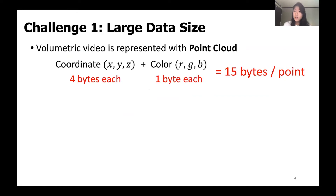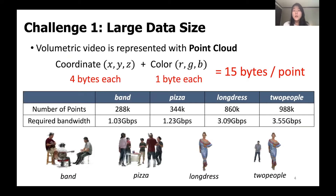The first challenge is the large data size. One of the most popular representations of volumetric video is point clouds, which is simply a set of points. Each point is represented by its XYZ coordinates and some attributes such as color. Since the coordinates need 4 bytes each and 1 byte each for color information, we need at least 15 bytes to represent a single point. According to state-of-the-art volumetric videos, the typical number of points in a frame ranges from 300k to 1 million points, requiring 1 to 3 Gbps of bandwidth to stream over the wireless network.